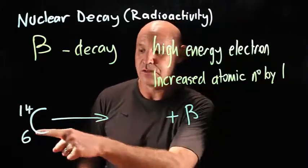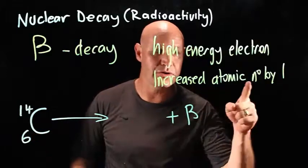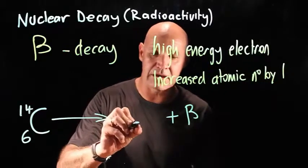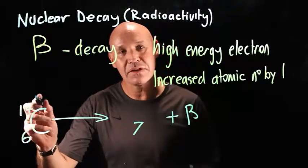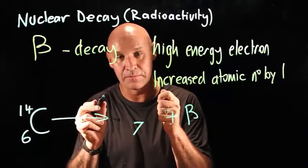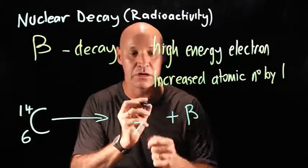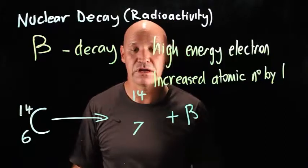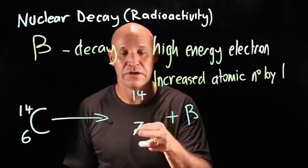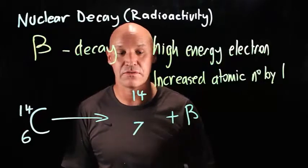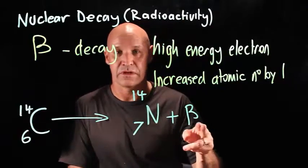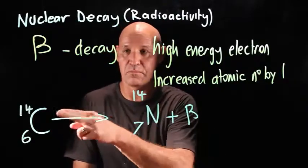The atomic number increases by 1 because a neutron turned into a proton, so the atomic number is now 7. The mass number doesn't change — because it lost a neutron and gained a proton, the mass number is still 14. Have a look at your periodic table and see which element has 7 protons, an atomic number of 7 — and that of course is nitrogen. So this is how we express beta decay.